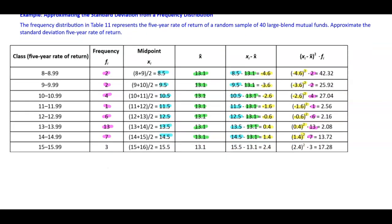The class 15 to 15.99 has a frequency of 3. The midpoint is 15.5 and the sample mean is 13.1. Taking 15.5 minus 13.1 gives 2.4. 2.4 squared times the frequency of 3 gives 17.28.